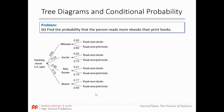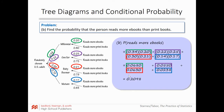To find the probability that a randomly chosen adult reads more ebooks than print books, we use all four paths: they could be Millennial and ebook, Gen Xer and ebook, Baby Boomer and ebook, or Mature and ebook. Multiplying across branches: 0.34×0.20 + 0.22×0.25 + 0.30×0.21 + 0.14×0.17. Adding all four products together gives the total probability of reading more ebooks.